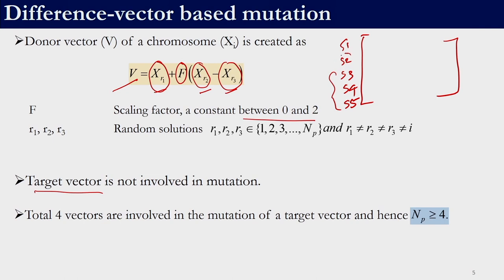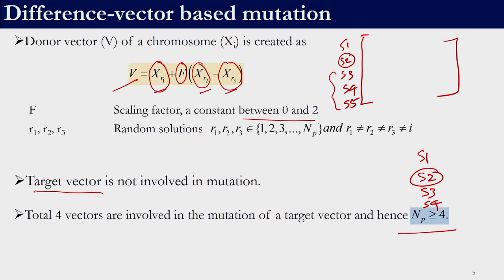When generating the donor vector for S1, three other random solutions help generate it — S1 is not involved. Similarly for S2, three other random solutions are used. This means the population size must be at least 4, because when working with solution 1 we need 3 different random solutions. The three solutions should not be equal to each other, and the target vector itself does not participate in mutation.